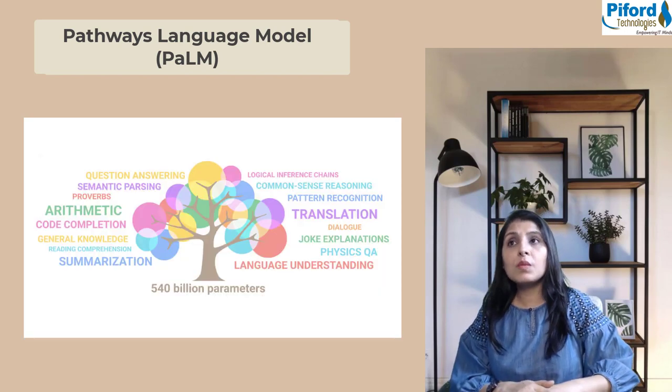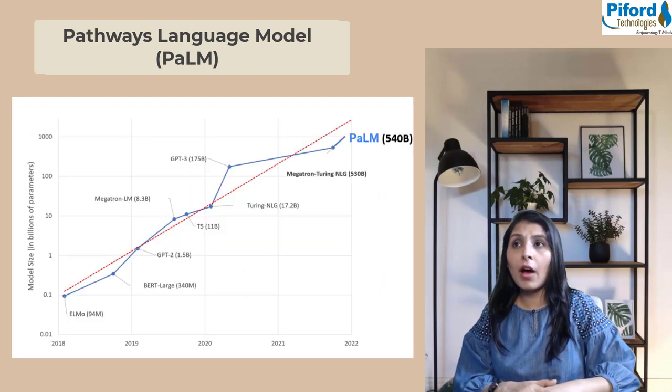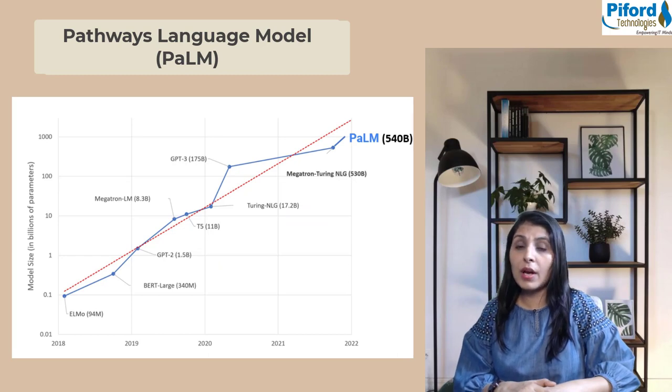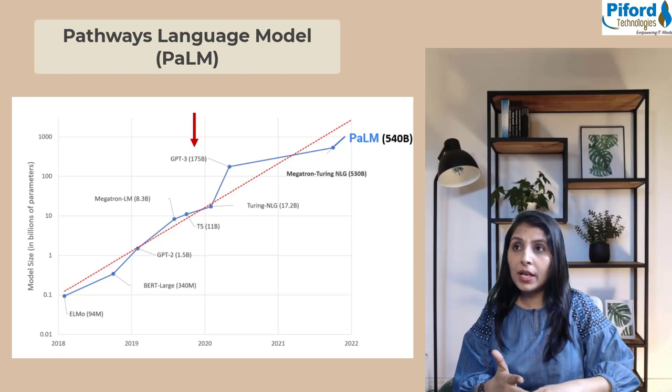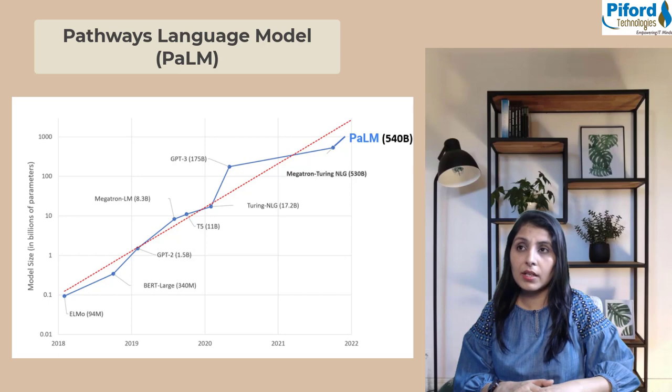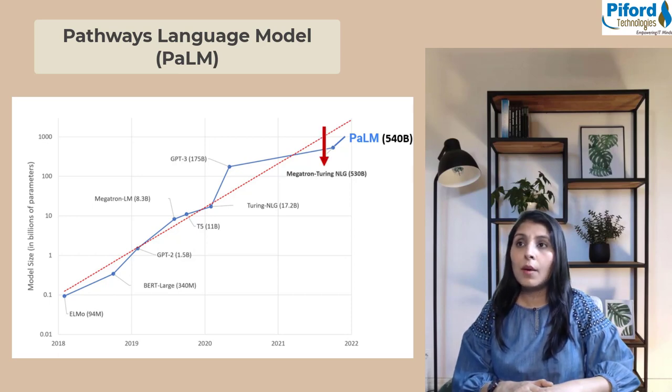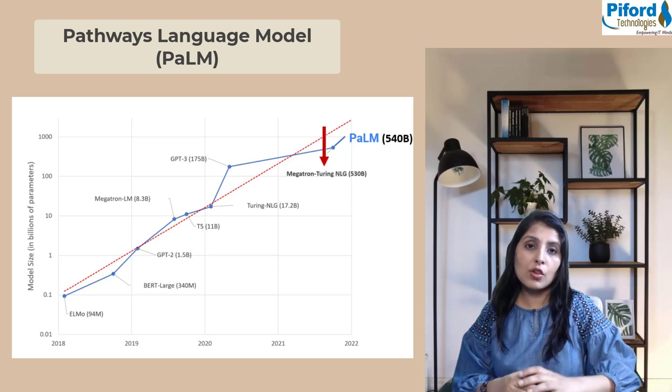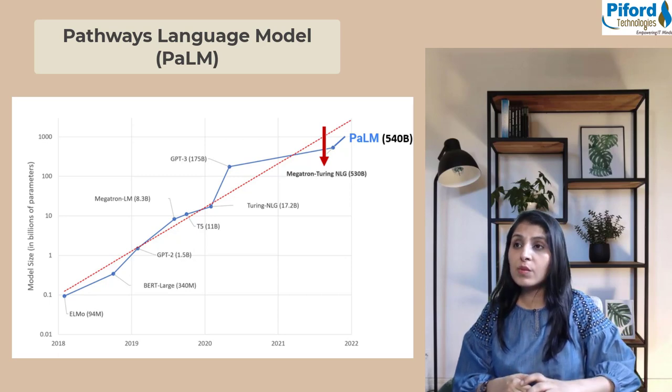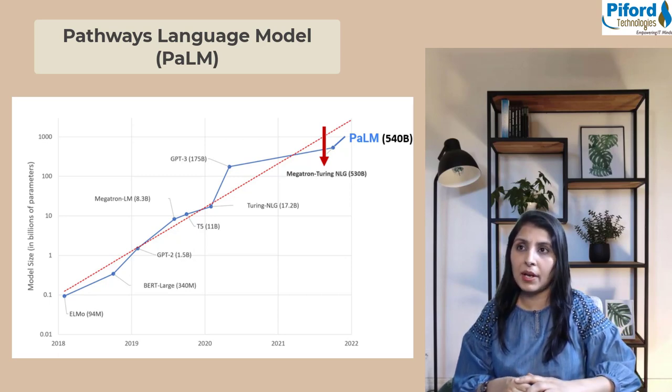Prior to this Pathways Language Model, there are already different language models by different companies. For example, GPT-3 developed by OpenAI with 175 billion parameters, and Megatron-Turing NLG by Microsoft and Nvidia with 530 billion parameters.